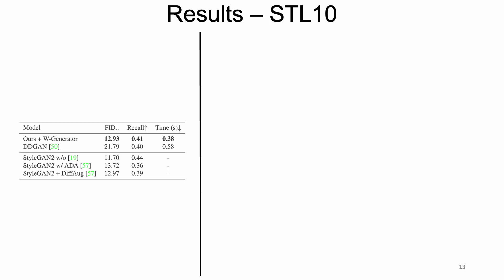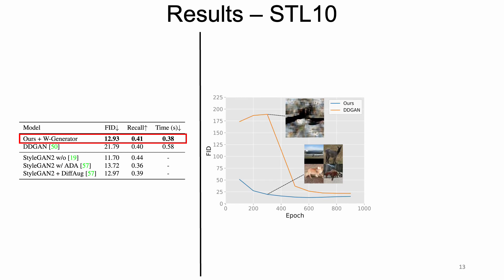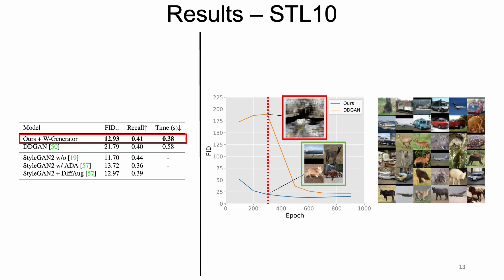Next, we conduct experiments on the STL-10 dataset, which has a higher resolution than CIFAR-10. As shown, our method exceeds DDGAN in both FID score and inference time. Additionally, ours offers faster convergence than the baseline, especially in the first 400 epochs. Particularly, DDGAN falls short in recovering the shape and structure of objects, whereas our method produces faster recovery. Our qualitative images are shown on the right.